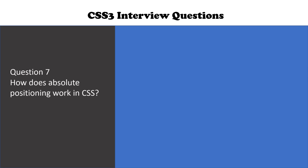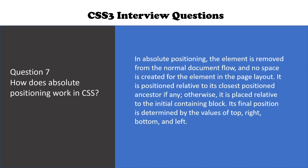How does absolute positioning work in CSS? In absolute positioning, the element is removed from the normal document flow and no space is created for the element in the page layout. It is positioned relative to its closest positioned ancestor; otherwise it is placed relative to the initial containing block. Its final position is determined by the values of top, right, bottom, and left.